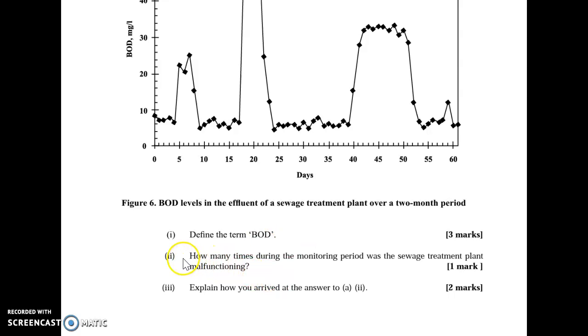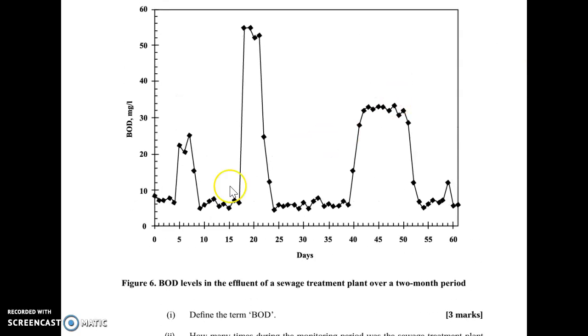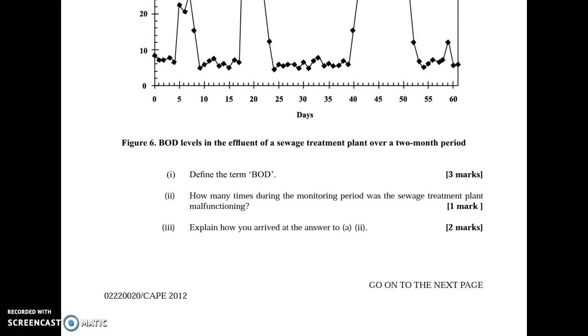Part two: how many times during the monitoring period was the sewage treatment plant malfunctioning? We're looking at the spikes. Before the actual spikes in BOD values, we see a general stable plot of points on the graph. We see this is one, this is two, this is three, and we also have a small peak in the corner here which is four. So there were four times during the monitoring period where the sewage treatment plant was malfunctioning.